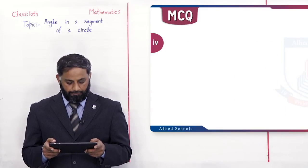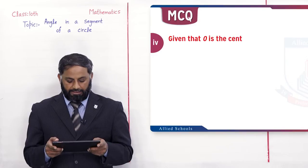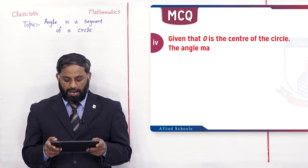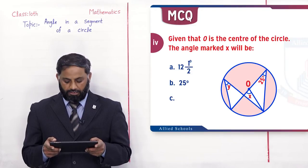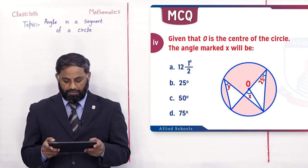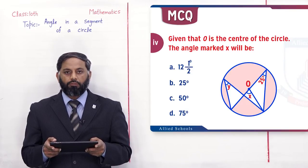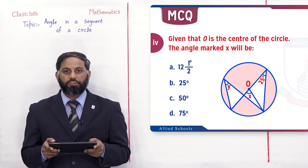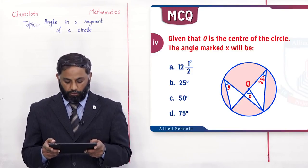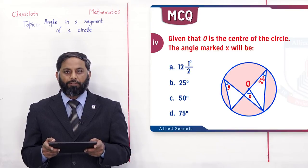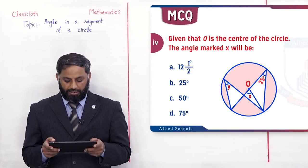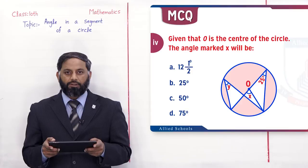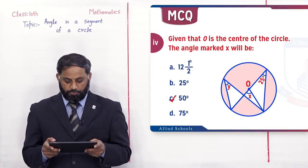Next MCQ: Given that O is the center of the circle, the angle marked x will be. Options: A) 12.5°, B) 25°, C) 50°, D) 75°۔ Figure میں 25° circumference پہ بنا ہوا angle ہے تو یہ circumscribed angle ہوگا۔ Angle x central angle ہے تو central angle = 2 × circumscribed angle = 2 × 25° = 50°۔ C option correct ہے۔